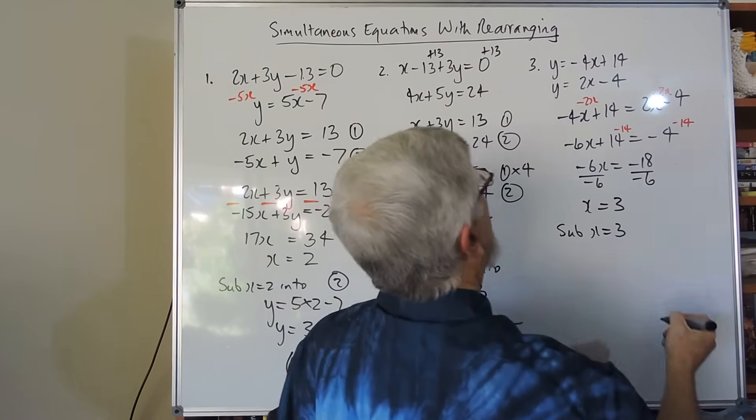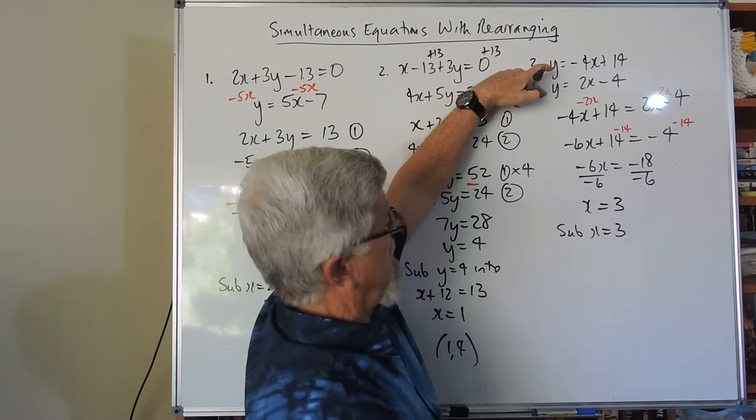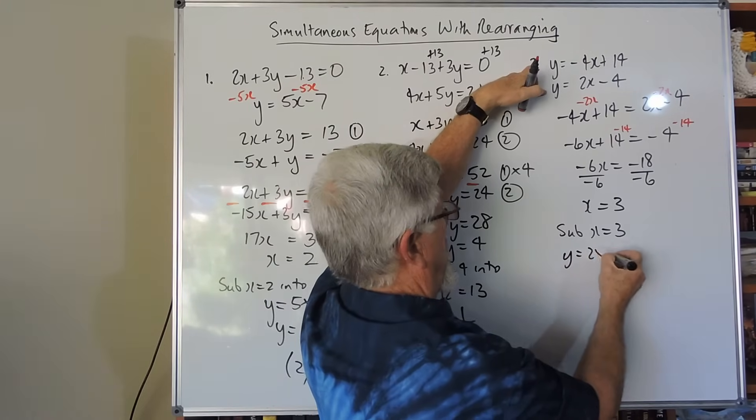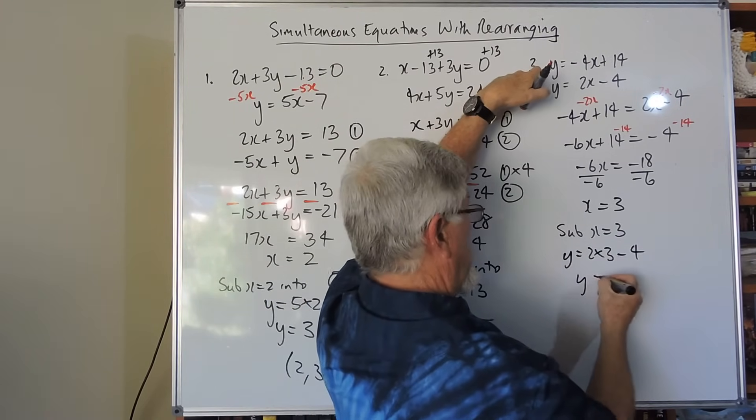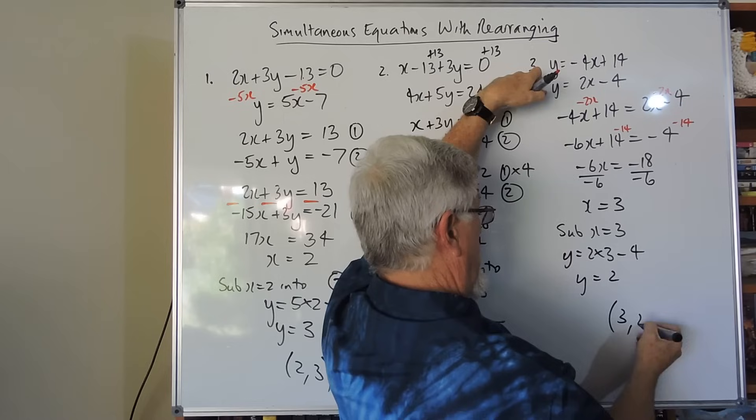And we're back to substitute x equals 3. And I'm going to put it properly into that one there. So that's 2 times 3 minus 4. 6 takes 4 is 2. And we've got our solution of 3, 2.